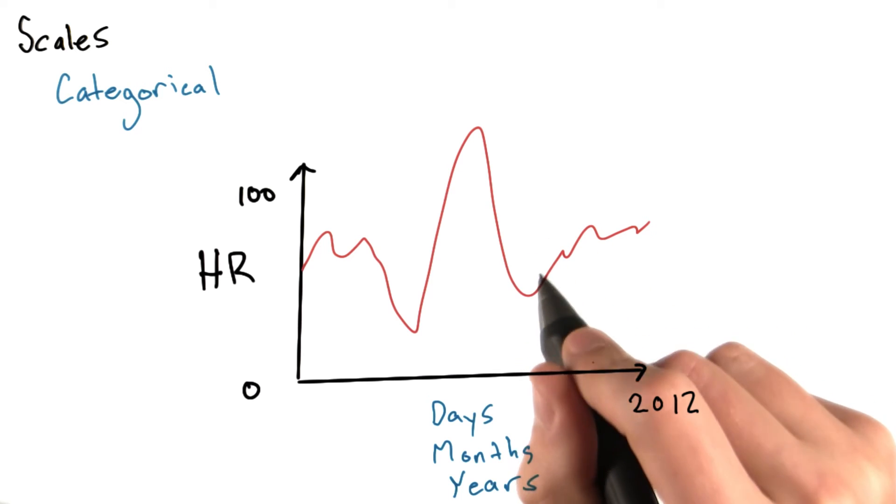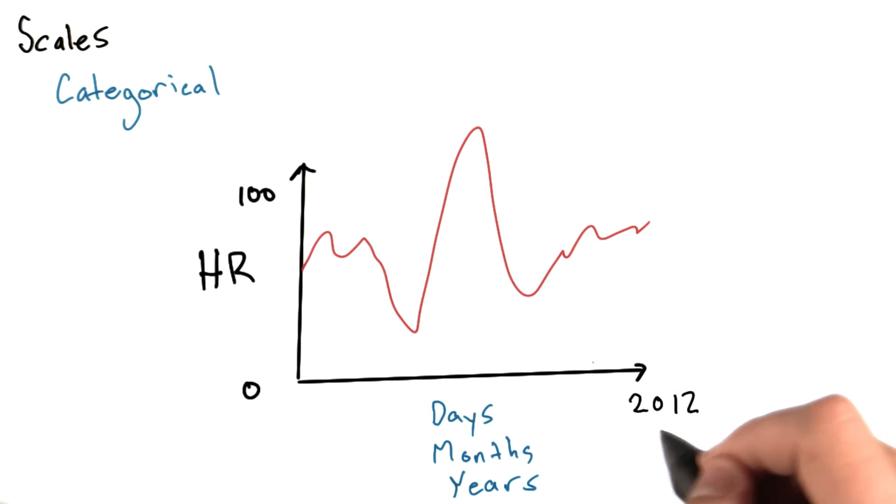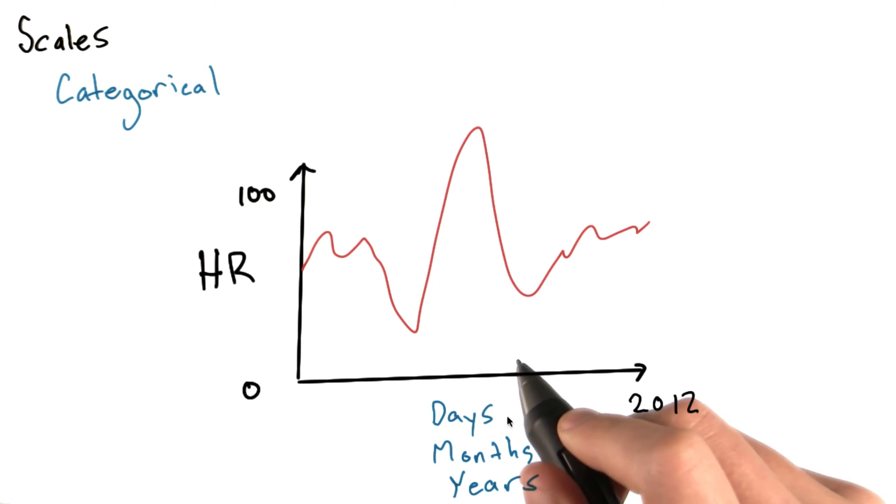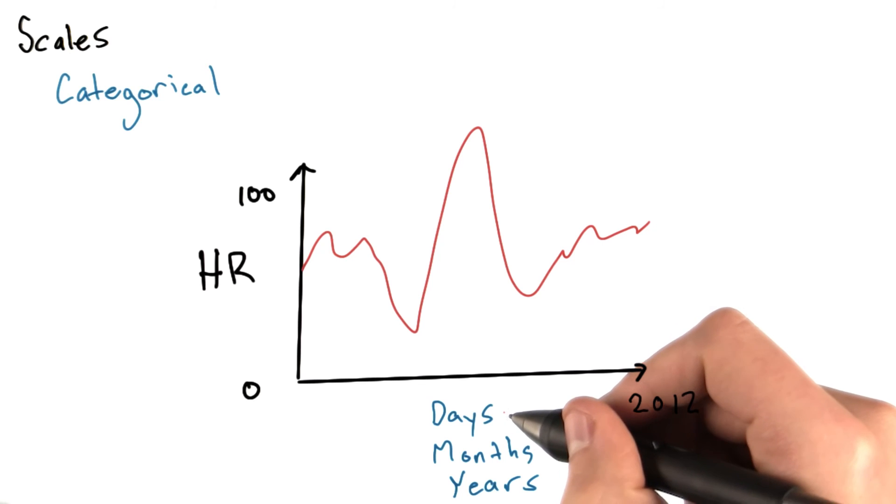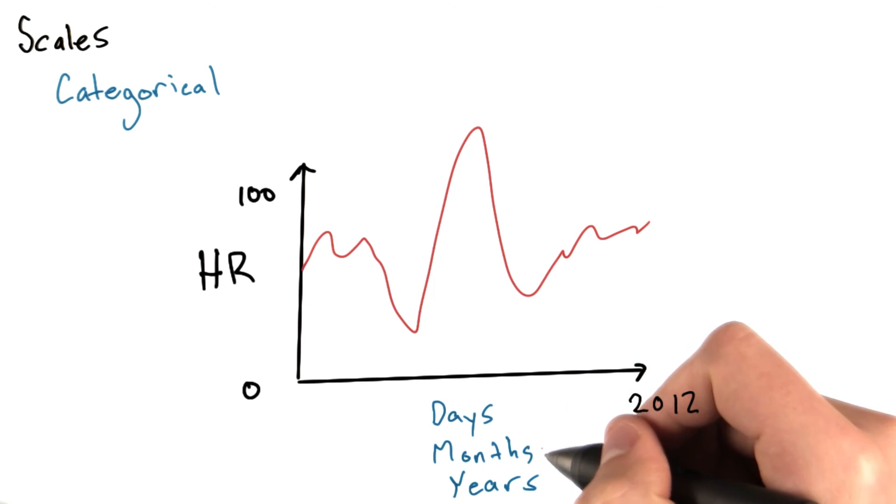Depending on what you're trying to communicate with your data, you might use a different time scale here. So if you're looking at fluctuations that happen on a very short time scale, days are more appropriate. But if we're looking at long term trends, we may want to look at data on a month to month, or year to year basis.